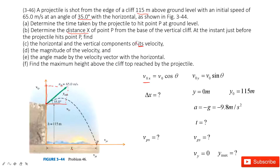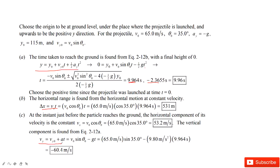The next part asks you to find the horizontal and vertical components of the velocity at point P. The velocity at P has two components: Vpx and Vpy. For the x-component, it is the same as the initial velocity in the x-component — nothing changes. For the y-component, you know the initial velocity, acceleration, and time t, so the velocity at P in the y-component is the initial velocity plus acceleration times t.